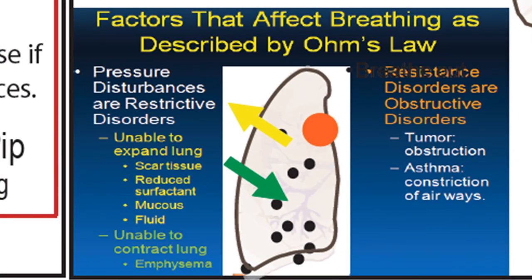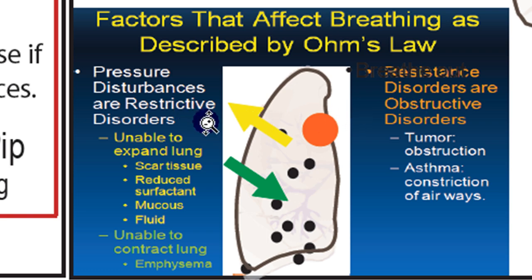Why would we want to talk about lung function in terms of Boyle's Law? There are two main ways to talk about abnormal lung function: restrictive disorders and obstructive disorders. Restrictive disorders are disorders where it's difficult for the lung to change its volume — it could be unable to expand due to scar tissue, reduced surfactant, mucus, or fluid. Anything that makes it hard for the lung to increase its volume will make it difficult to decrease pressure and breathe in.